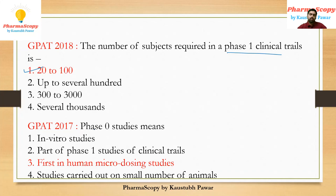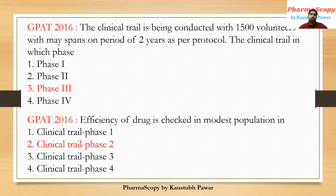In GPAT 2017, there was one question from clinical trials related to phase zero. The question was: phase zero study means — and the correct answer is first-in-human microdosing studies. It is also called microdosing studies. In vitro studies are done prior to clinical trials and animal studies is the wrong answer. The correct answer is first-in-human microdosing studies.